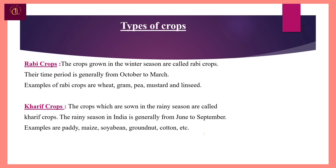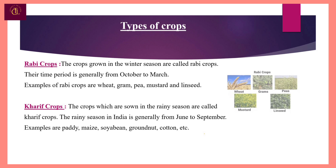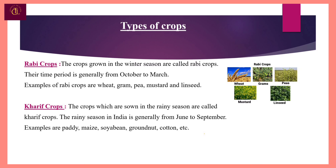Rabi crops are crops grown in the winter season. Their time period is generally from October to March. Examples of Rabi crops are wheat, gram, pea, mustard, and linseed.